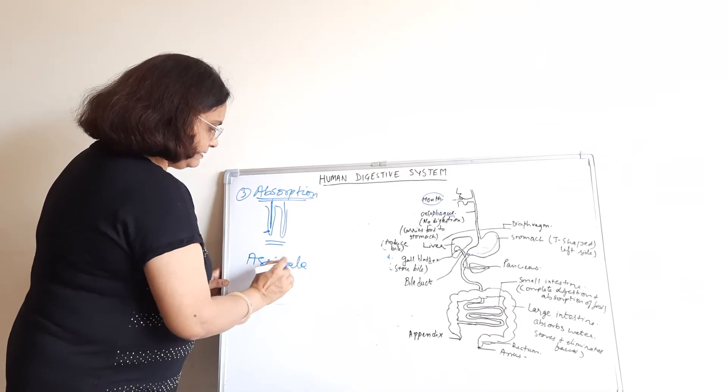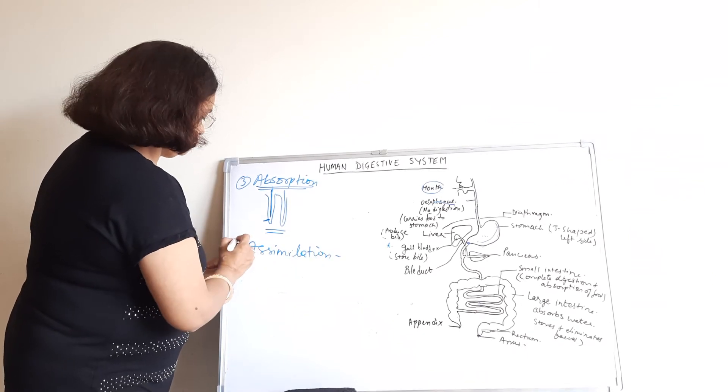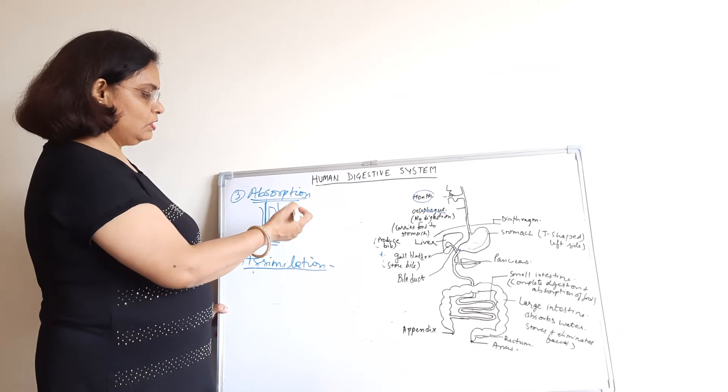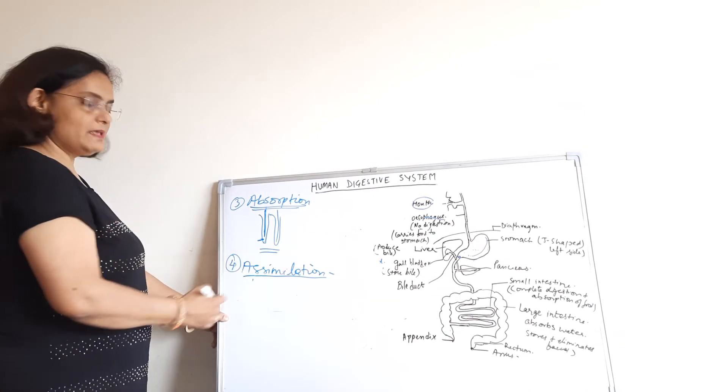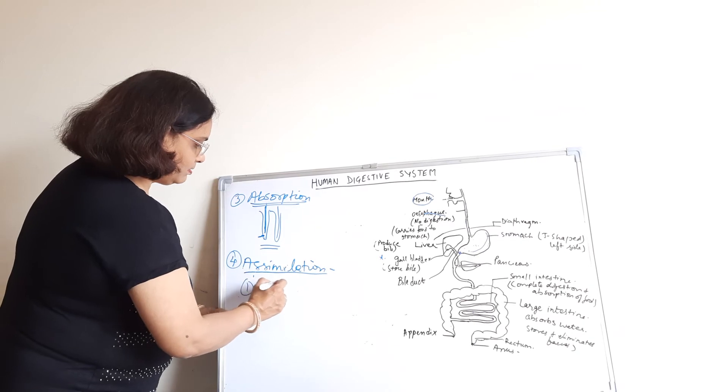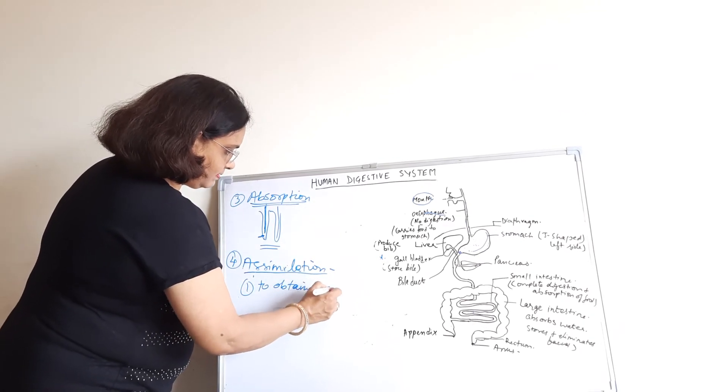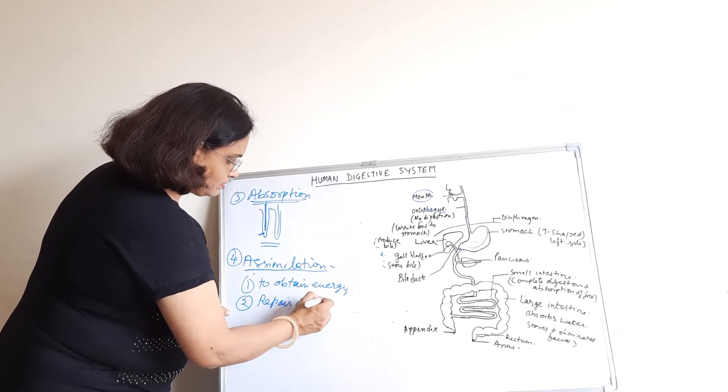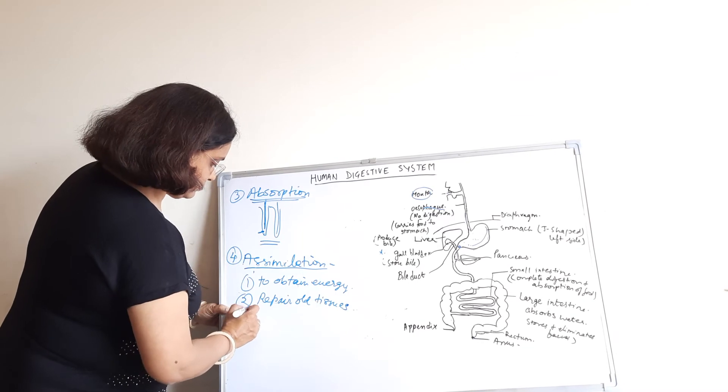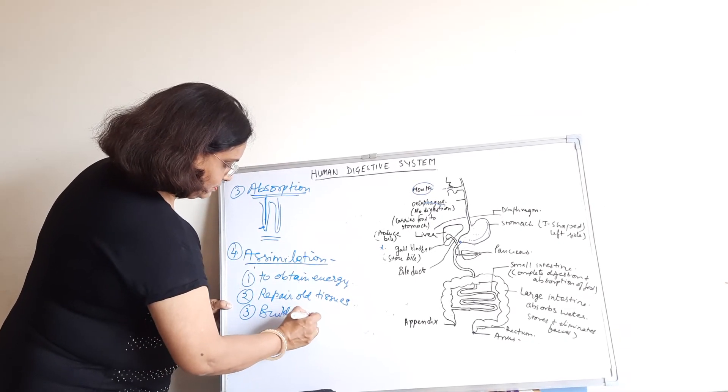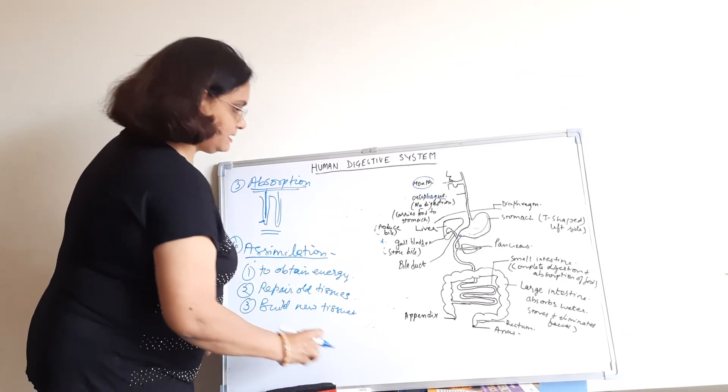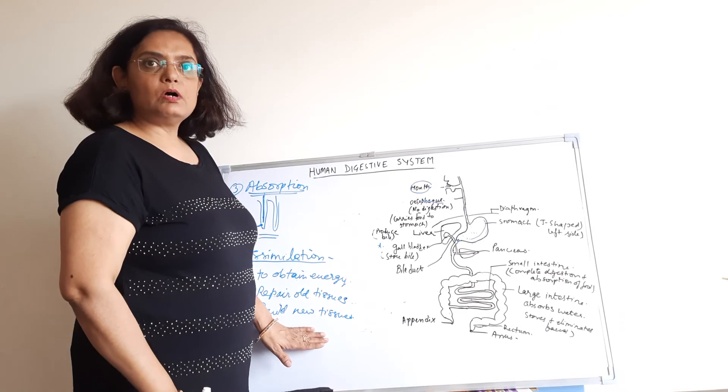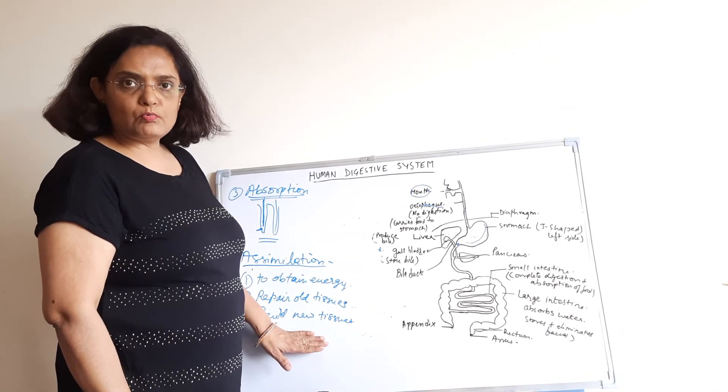After absorption, assimilation takes place. Assimilation means that the absorbed food is used to obtain energy, to repair old tissues, and to build new tissues.